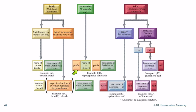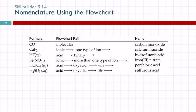We usually drop the mono prefix on the first element. So CO would just be carbon, right? And then we have a prefix, and then the base of the second element was oxygen, so it becomes oxide. Right? So we end up with carbon monoxide.